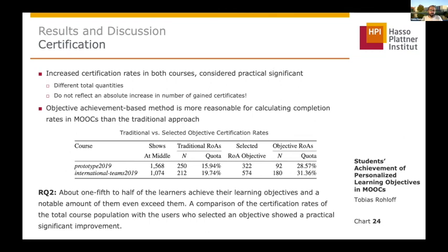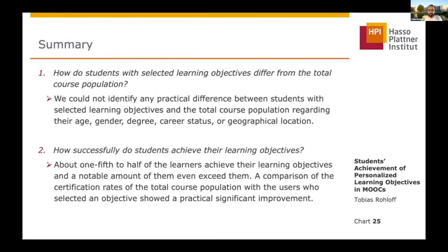To answer the second research question: about one-fifth to half of the learners achieved their learning objectives, and a notable amount even exceeded them. The comparison of certification rates of the total course population with users who selected an objective showed a practically significant improvement.